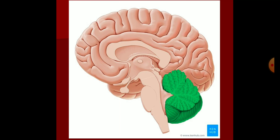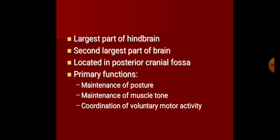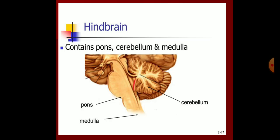When you view the cerebellum, it is not of smooth appearance. It is characterized by the presence of fissures, and the elevated parts intervening between the fissures are termed folia. The cerebellum is the largest part of the hindbrain and the second largest part of the brain, located in the posterior cranial fossa. Its primary functions are maintenance of posture, maintenance of muscle tone, and coordination of voluntary motor activity.